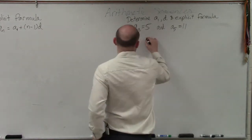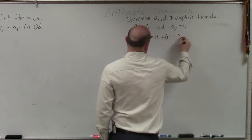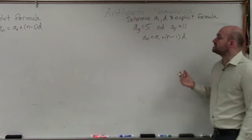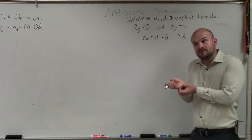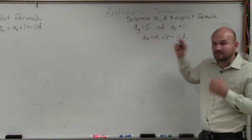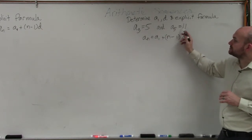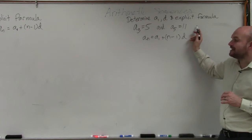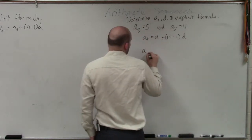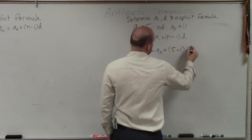So if I have A sub N equals A sub 1 plus N minus 1 times D, basically what we always used this for was we always started with the first term, and whatever term we were trying to figure out was represented by N. What we can now do is plug in these values. I'm going to say A sub 5 equals A sub 3 plus 5 minus 1 times D.